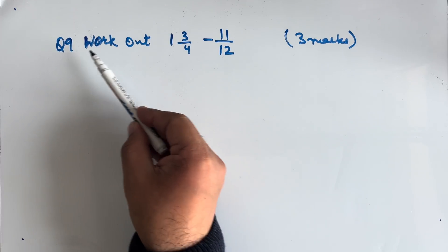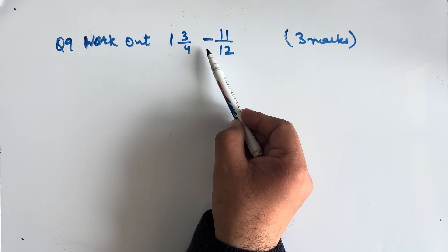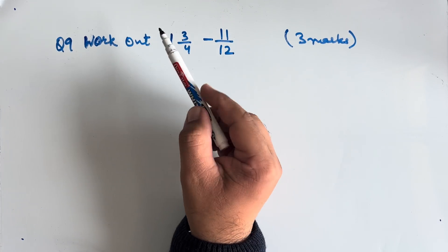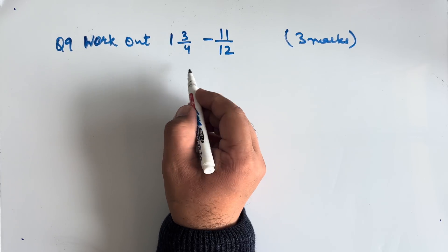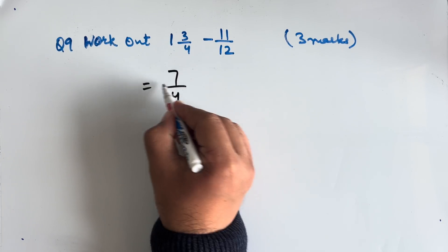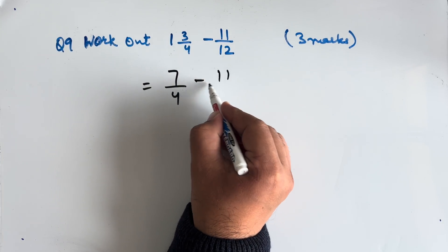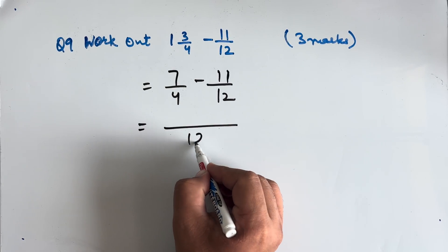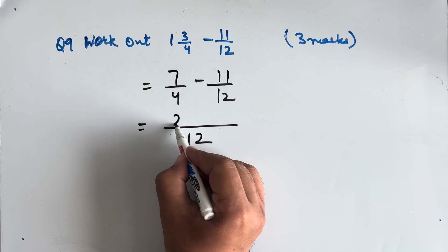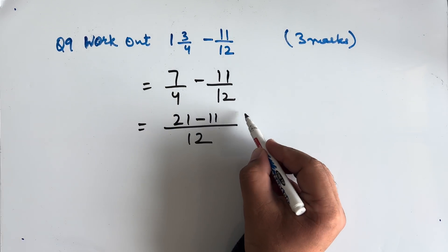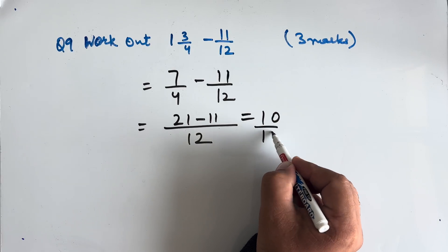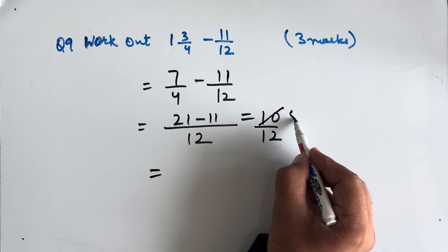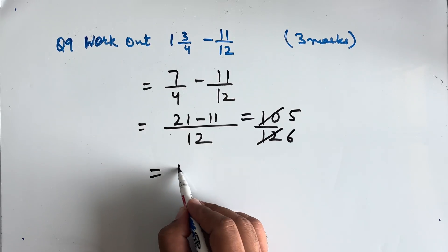Question 9: Work out 1 and 3/4 minus 11/12. This is worth 3 marks. 1 and 3/4 becomes 7/4. Taking LCM of 4 and 12, which is 12, we get 21 minus 11 = 10/12. This cancels by 2 to give 5/6 as our final answer.